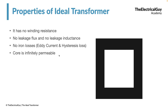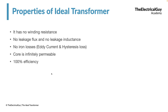Since the ideal transformer has no winding resistance, no I²R losses, no leakage flux, no iron losses, and an infinitely permeable core, the efficiency of the ideal transformer will be 100%. It has no losses, no leakage reactance, and the core is infinitely permeable — so definitely the efficiency is 100%.